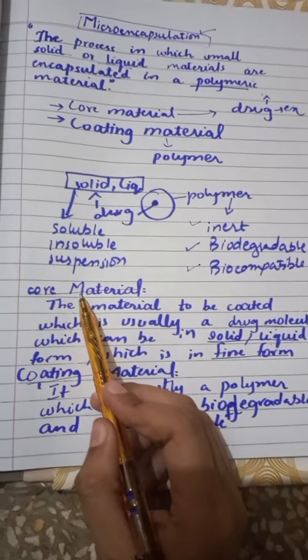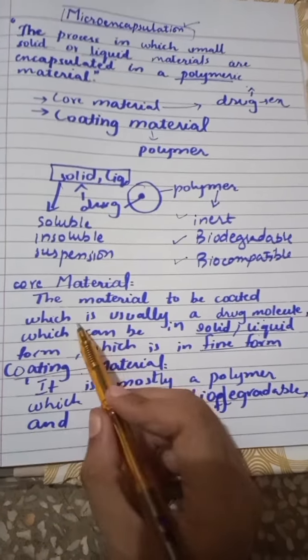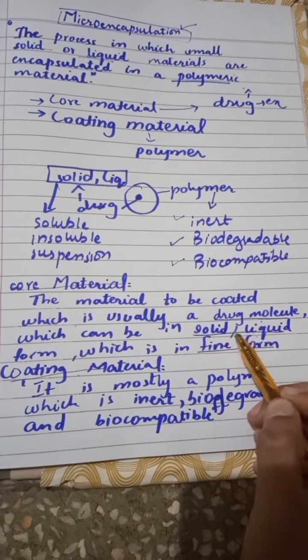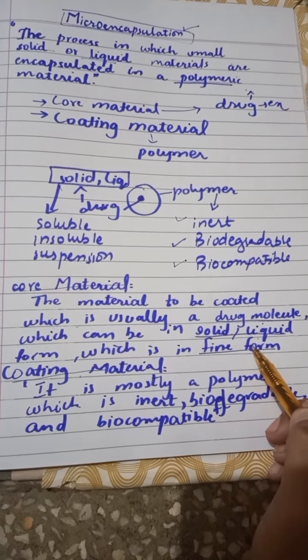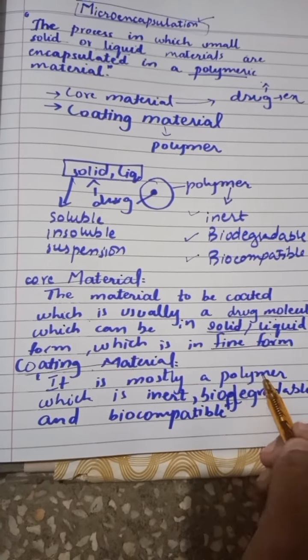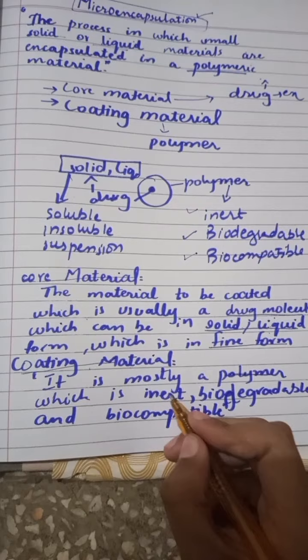Here we can see the definition of the core material and the coating material. Core material is that material which must be coated and it is the drug molecule which can be solid or liquid and it must be in the fine form. Then the other one is the coating material which is mostly a polymer and it must be inert, biodegradable, and biocompatible.